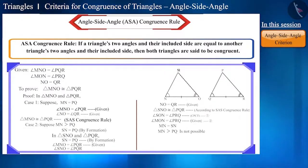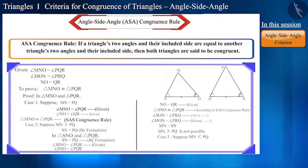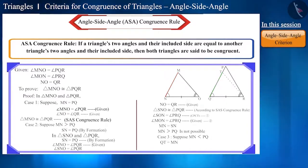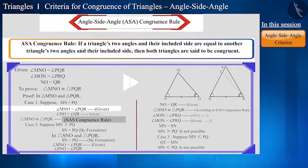Similarly, if we assume that side MN is smaller than side PQ, then we can take point T on side PQ such that side QT is equal to side MN. Again by repeating the same procedure, we can conclude that it is not possible for side MN to be smaller than side PQ. You can try to reach the conclusion by pausing the video.